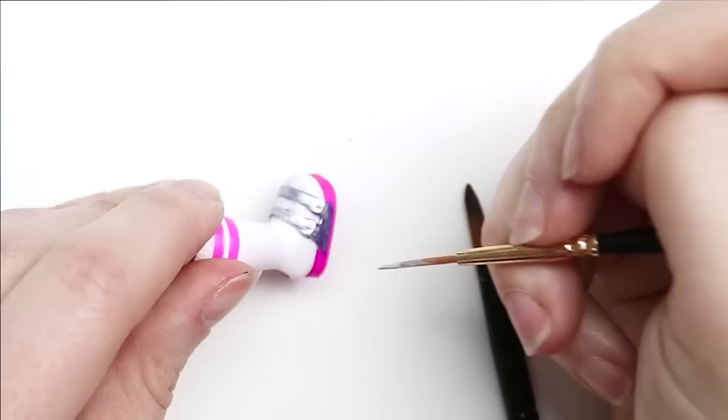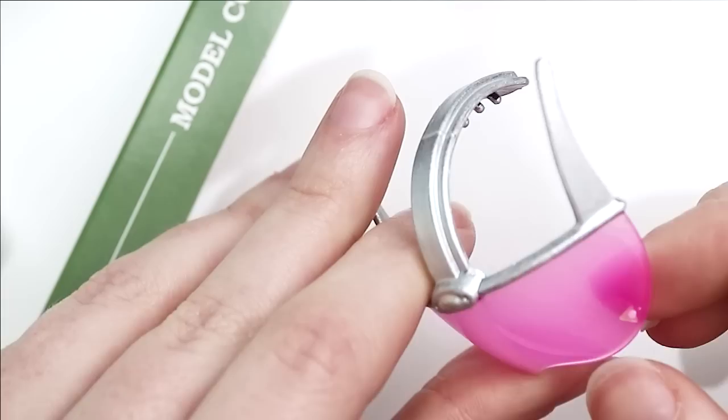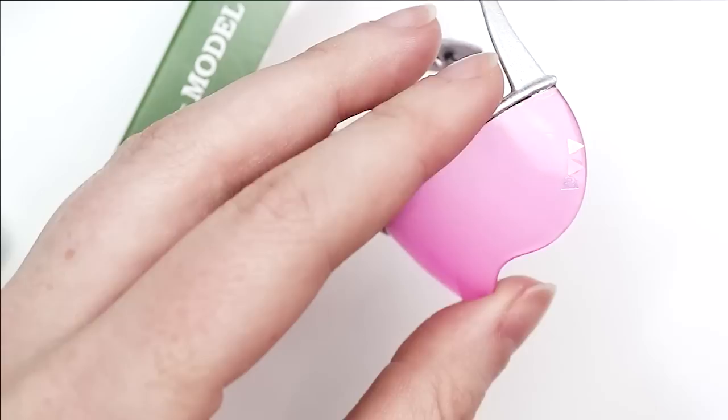I'm also going to paint her slides silver too. And you already know that I have to bling out that visor. I'm just taking some iridescent glitter and placing it along the outside of the visor. And using tiny rhinestones I'm going to give some accents on the corners of the visor.